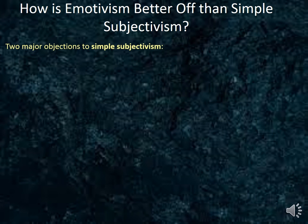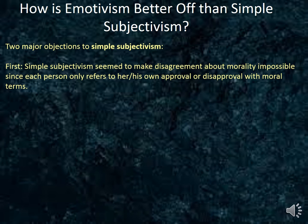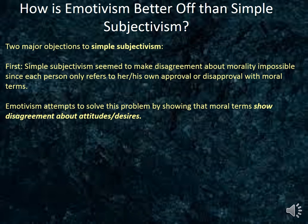Recall that we mentioned two major objections to simple subjectivism. The first problem was that simple subjectivism seemed to make disagreement about morality impossible, since each person only refers to his or her own approval or disapproval with moral terms. Rachels used the example of Foreman and Falwell debating homosexuality. Simple subjectivism cannot locate a disagreement, since each is really just saying 'I approve of' or 'I don't approve of.' Emotivism attempts to solve this problem by showing that while moral terms do not allow people to disagree about facts, they do show disagreement about attitudes or desires.